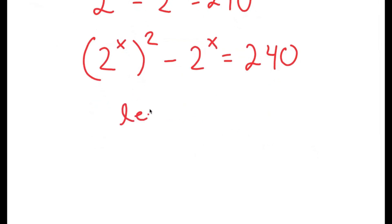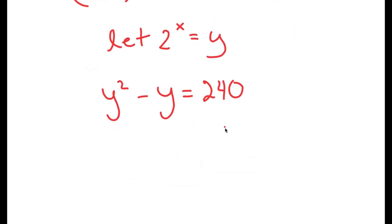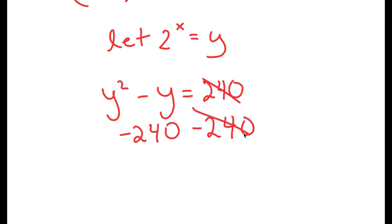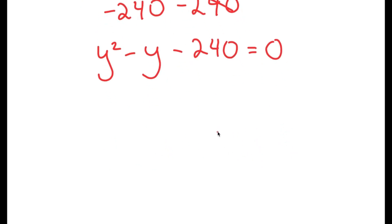Now I'm going to let 2 to the power of x equal y. Substituting y for 2 to the power of x, I get y squared minus y is equal to 240. Subtracting 240 from both sides gives y squared minus y minus 240 equals 0. What I have here is a quadratic equation.